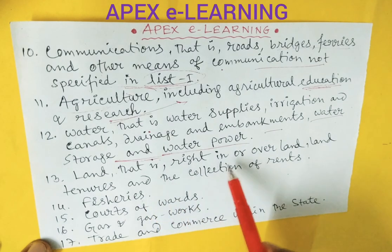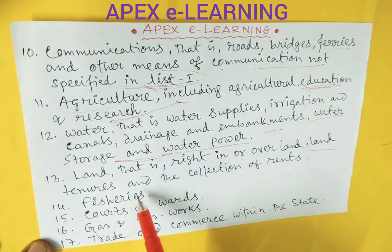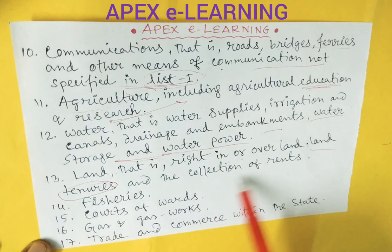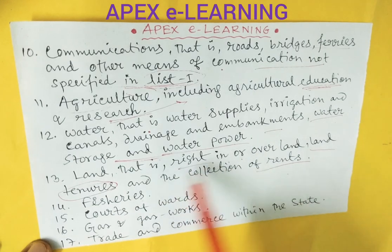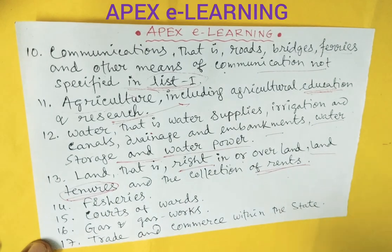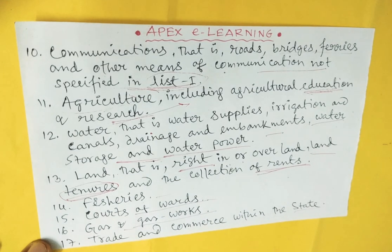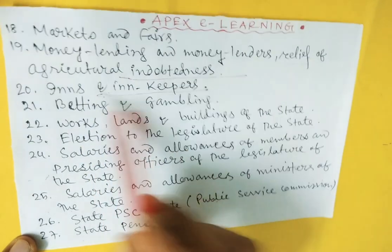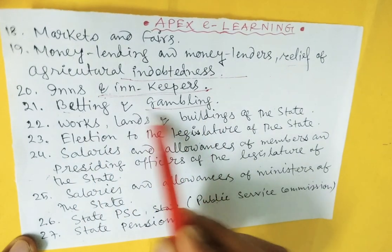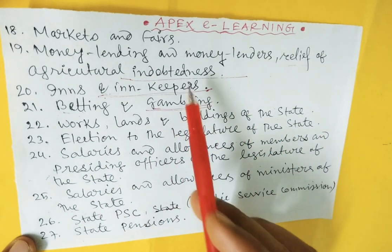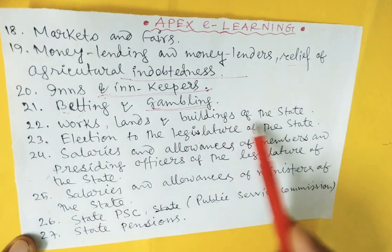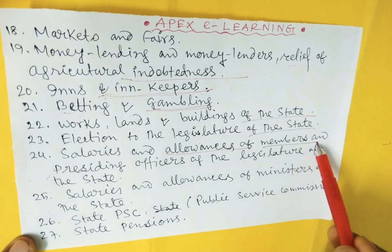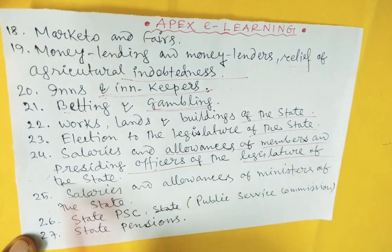Land — that is, rights in or over land, land tenures, and collection of rents. Trade and commerce within the states. Markets and fairs. Money lending and money lenders. Relief of agricultural indebtedness. Betting and gambling. Works, land and buildings of the state. Election of the legislature of the state.